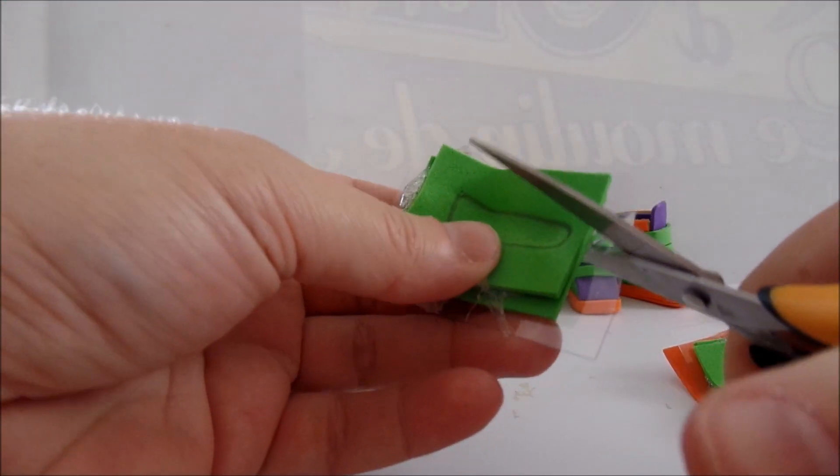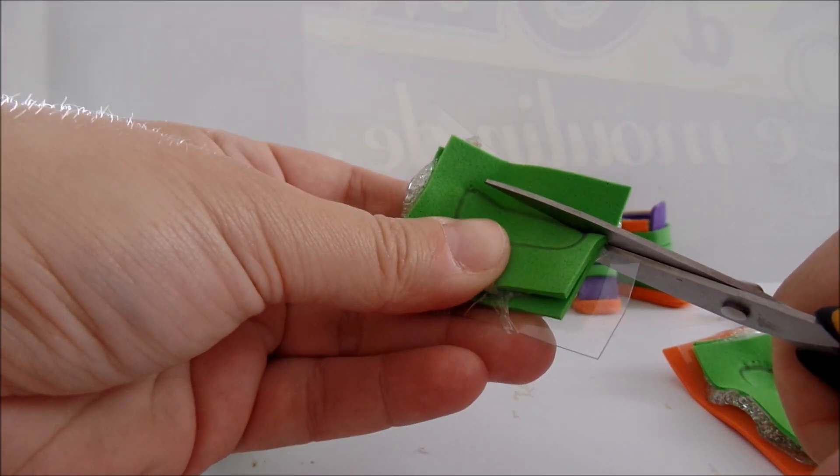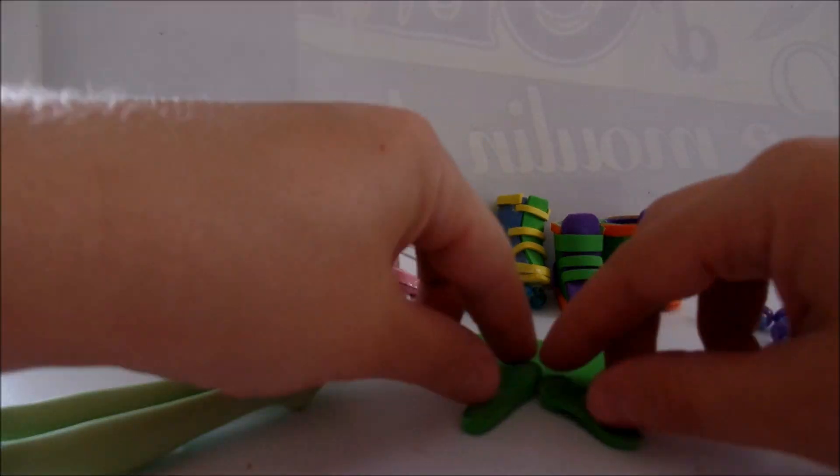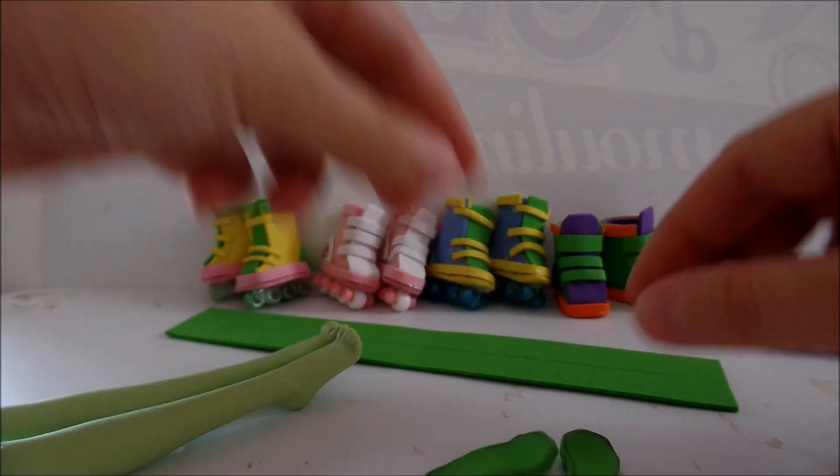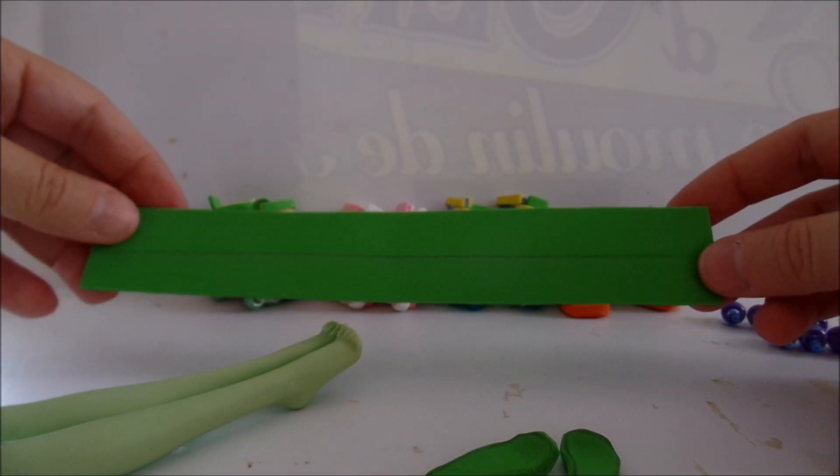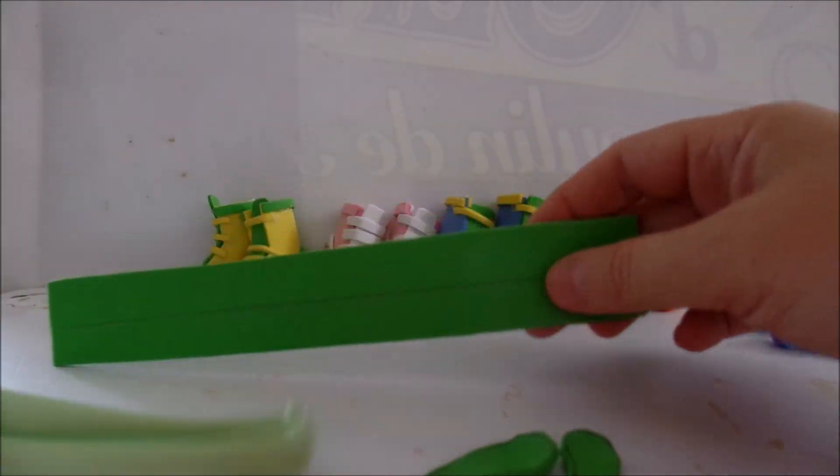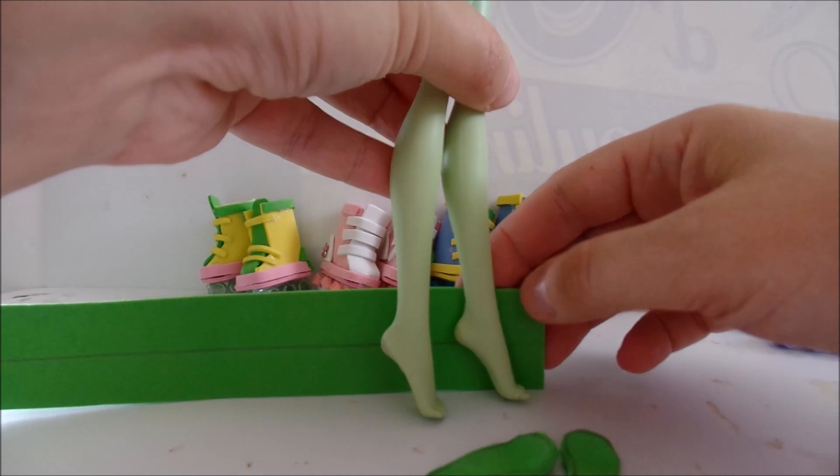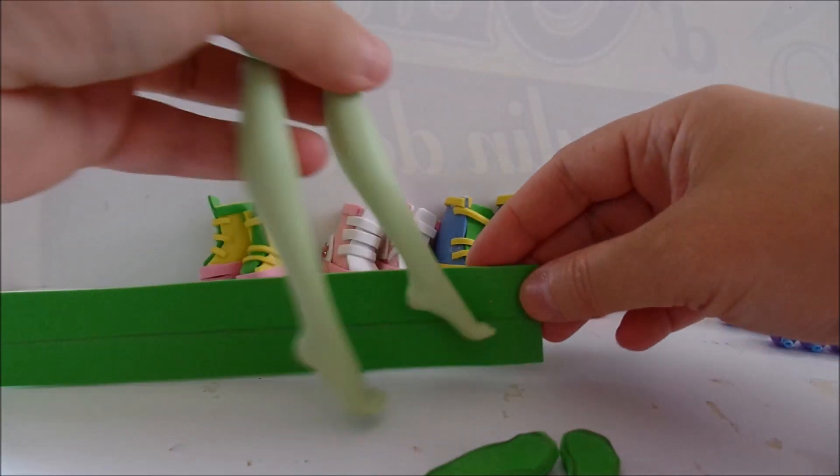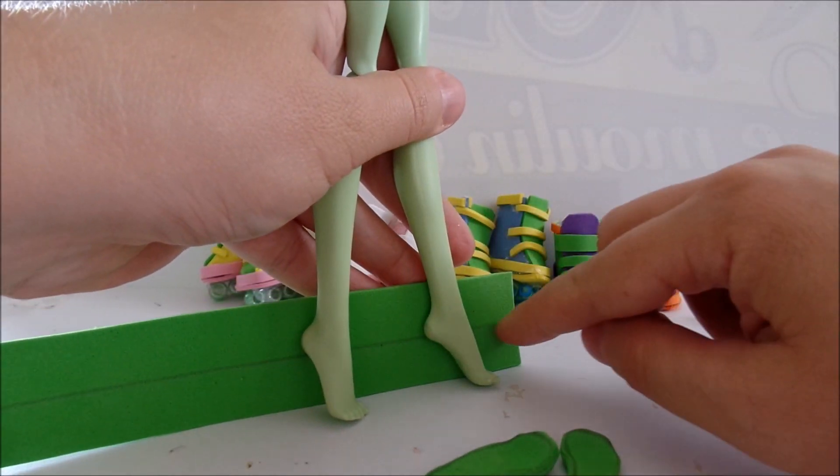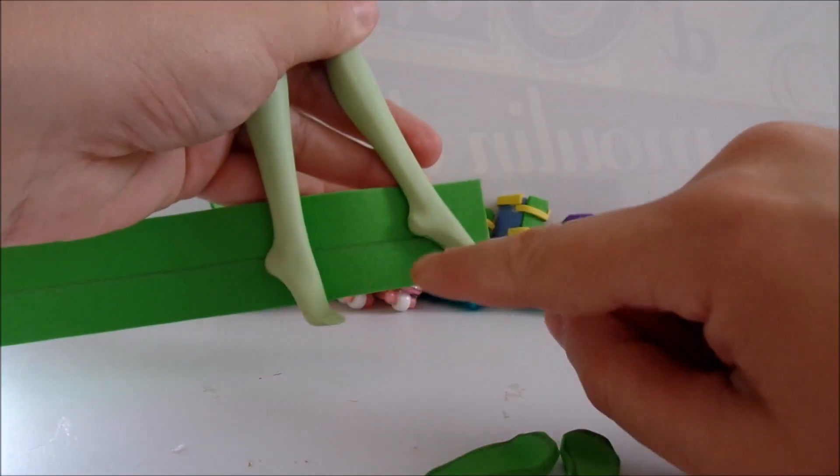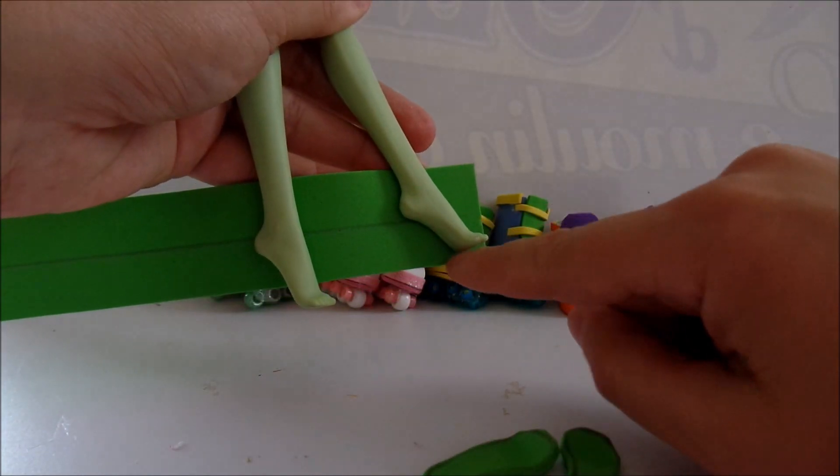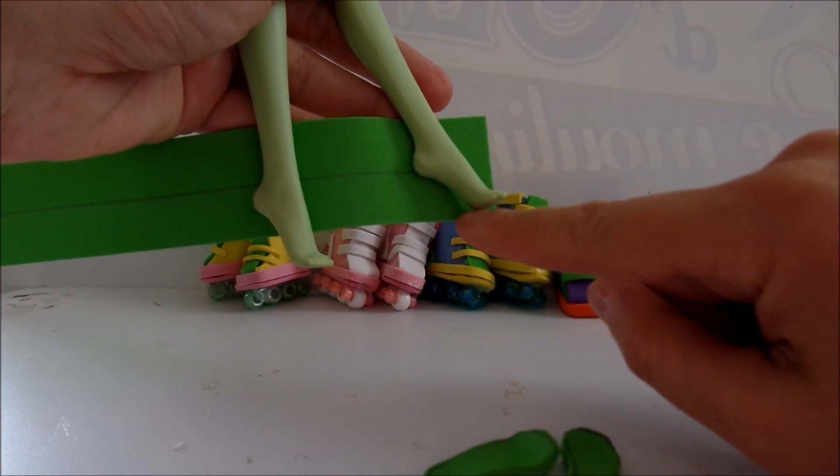Once the glue is solid, cut it out. Once you have both soles, you take a piece of foam that is about the height of the shoe and draw a line on it to mark the height of the ankle. This is going to be the angle of the shoe.